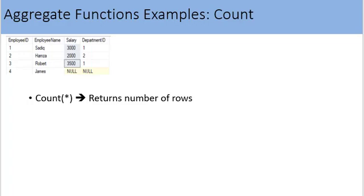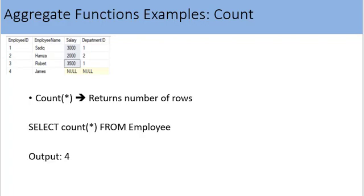Now let's look at the COUNT function — it comes in two flavors. When COUNT(*) is used, it returns the total number of rows including NULL rows. For example, to know the total number of rows in the employee table we write: SELECT COUNT(*) FROM employee. When this query is executed, it outputs 4, because there are 4 total rows in the employee table.